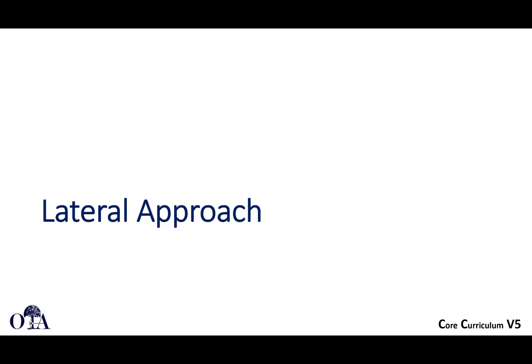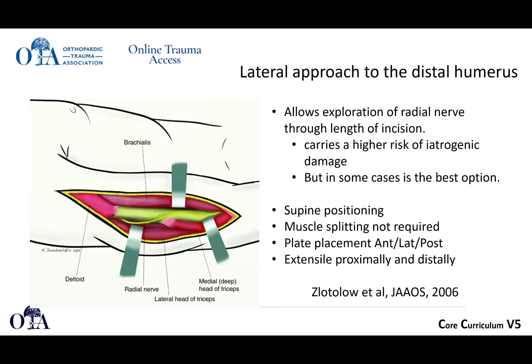A few words about the lateral approach. The lateral approach also gives you direct exposure of the radial nerve, and of course there's some higher risk of iatrogenic damage as well. The good thing about this is supine positioning — so if you have a polytrauma patient or a patient that's going to be tough to get safely into lateral or prone position, you can do this. You're going between the anterior and posterior muscle groups, so you really don't have to do a lot of muscle splitting. It is somewhat extensile, though not used quite as much anymore, but it's a good approach — the radial nerve is in your field the whole way.